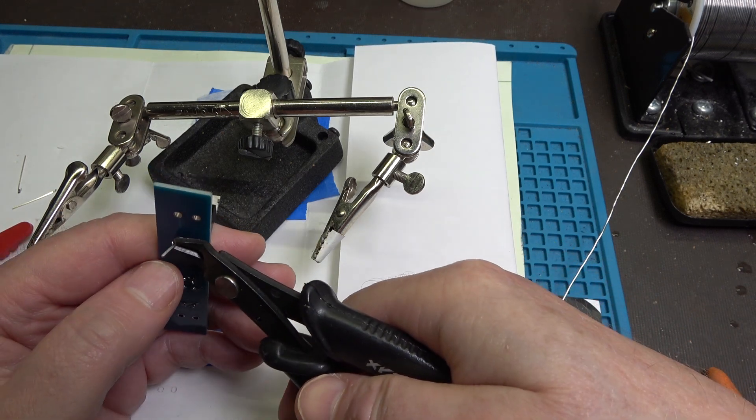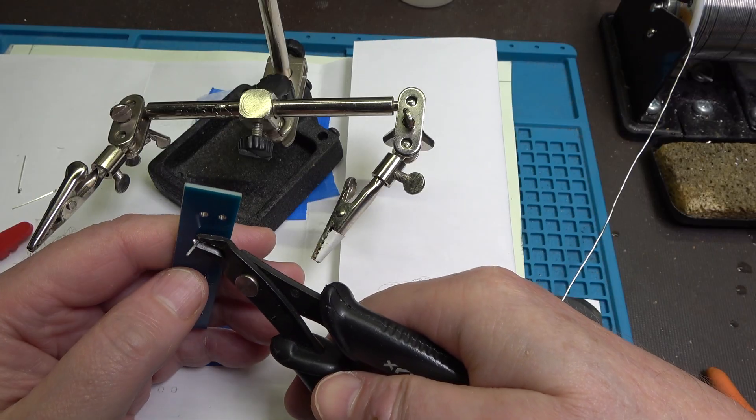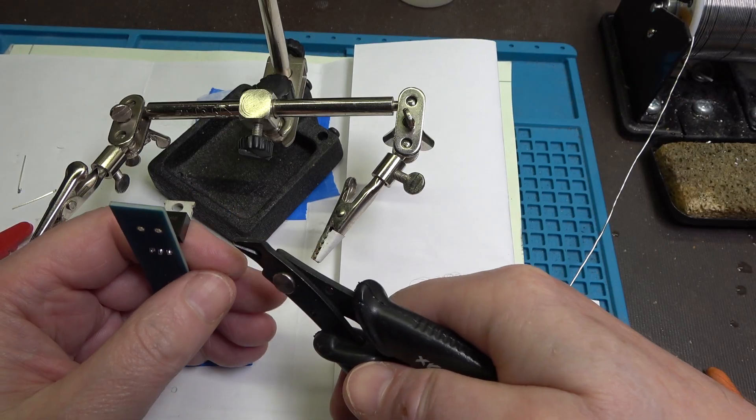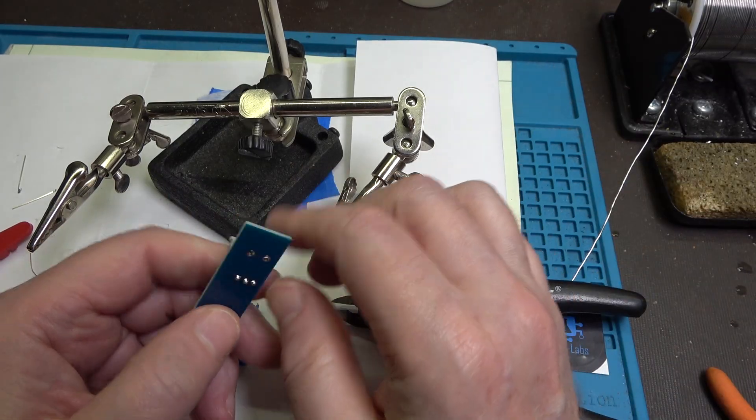I'm putting my thumb here. I'm taking the flush cutters with the flush side towards the circuit board. And I'm going right up there. And if I didn't do that, this thing is going to fly off. It'll fling off like spring loaded. By doing that, I control where that off cut goes.